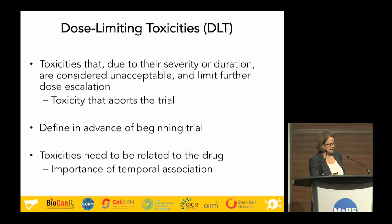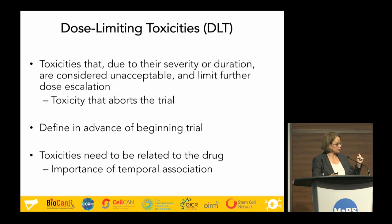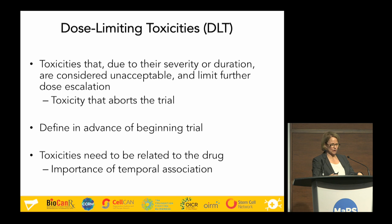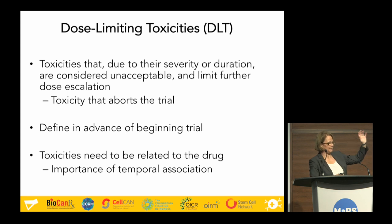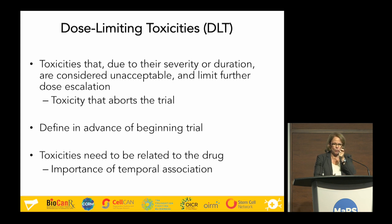Dose-limiting toxicities are toxicities that, due to their severity or duration, are considered unacceptable and limit further dose escalation — they can also be the toxicity that aborts your trial. These need to be defined well in advance of starting your clinical trial. You need to think about the temporal association: if you're monitoring for arrhythmias as a DLT but they only happen three weeks after drug administration, the arrhythmia likely has nothing to do with the drug. So defining that temporal association a priori is critical.